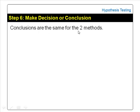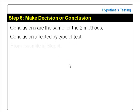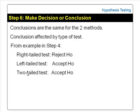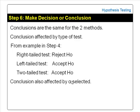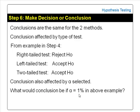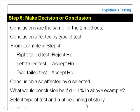The two methods give the same conclusions. The conclusion is affected by the type of test: from the example in step 4, a right-tailed test gives reject null hypothesis, while a left-tailed or two-tailed test gives accept null hypothesis. The conclusion is also affected by the selected level of significance alpha — for example, selecting alpha of 1% would have led to accepting the null hypothesis in the right-tailed test as well. We should select the type of test and the level of significance at the beginning and stick to them, not change them midway to obtain a desired conclusion.